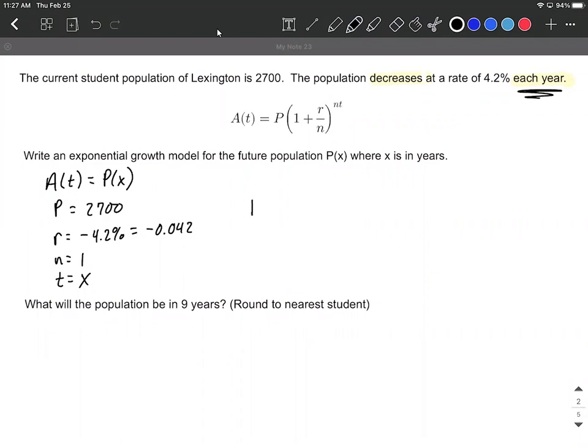So to write this formula, we have P of X equals 2,700 times 1 plus negative 0.042 divided by 1 raised to the 1 times X power.